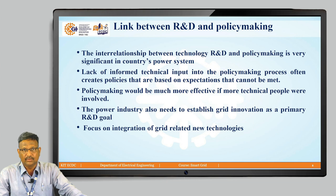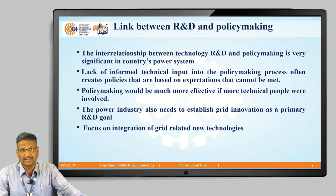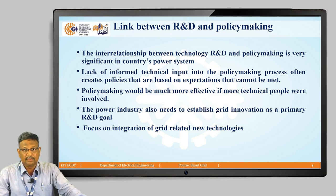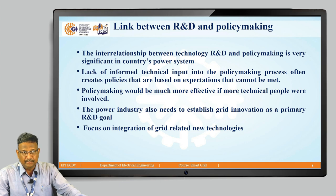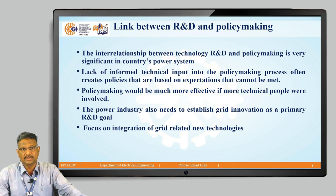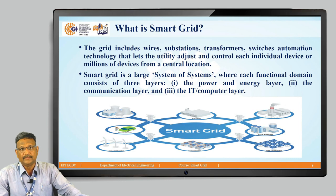The kind of interrelation required involves what changes need to be made in the power system. There is a lack of informed technical input into the policy making process, creating policies based on expectations that cannot be met. Policy making is more effective if more technical people are involved. The power industry also needs to establish grid innovation as a primary R&D goal, focusing on integrating new grid-related technologies like IEDs — Intelligent Electronic Devices — and IoT — Internet of Things — which will play a vital role in this system.